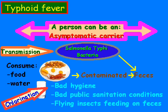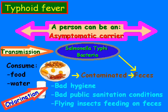One other note about transmission is that a person may become an asymptomatic carrier of typhoid fever. What that means is they don't have any symptoms and they're perfectly healthy; however, they are capable of infecting others with the disease. One estimate suggests that approximately 1 in 20 people who contract typhoid continue to carry the disease after they completely recover.